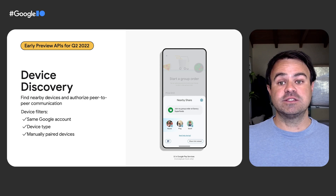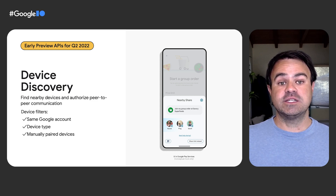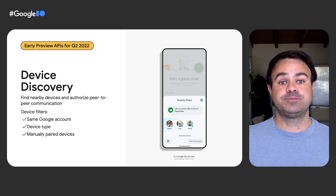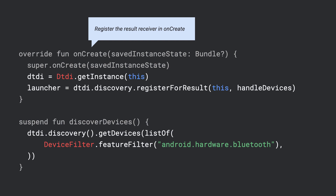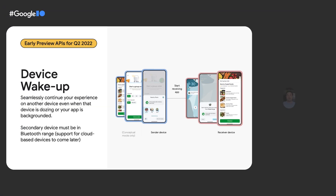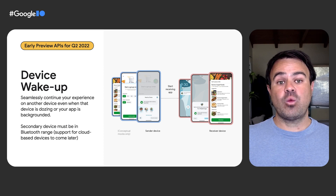To simplify the work to discover devices that can participate in a multi-device experience, we extracted the logic Nearby Share uses to discover and authorize devices, and augmented it with additional capabilities so that your application can easily join devices in a shared experience while preserving user privacy. Initiating the discovery and authorization flows is as simple as registering a callback that will be called when devices are authorized for your application, and calling our get devices method when you want to trigger our discovery UX. With authorized devices, you can use our wake-up API to trigger a notification on receiver devices to engage the user to participate in your experience.